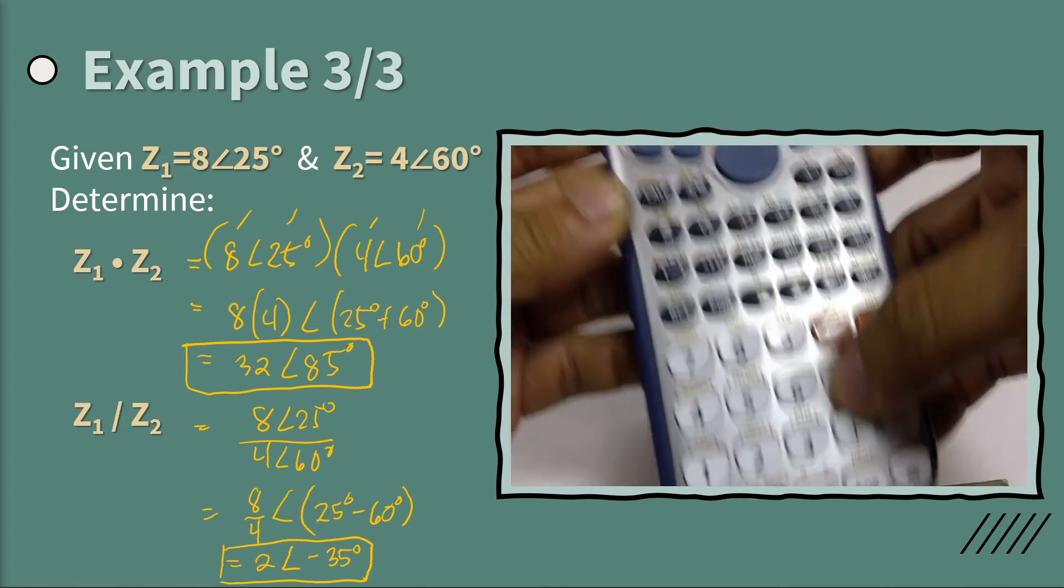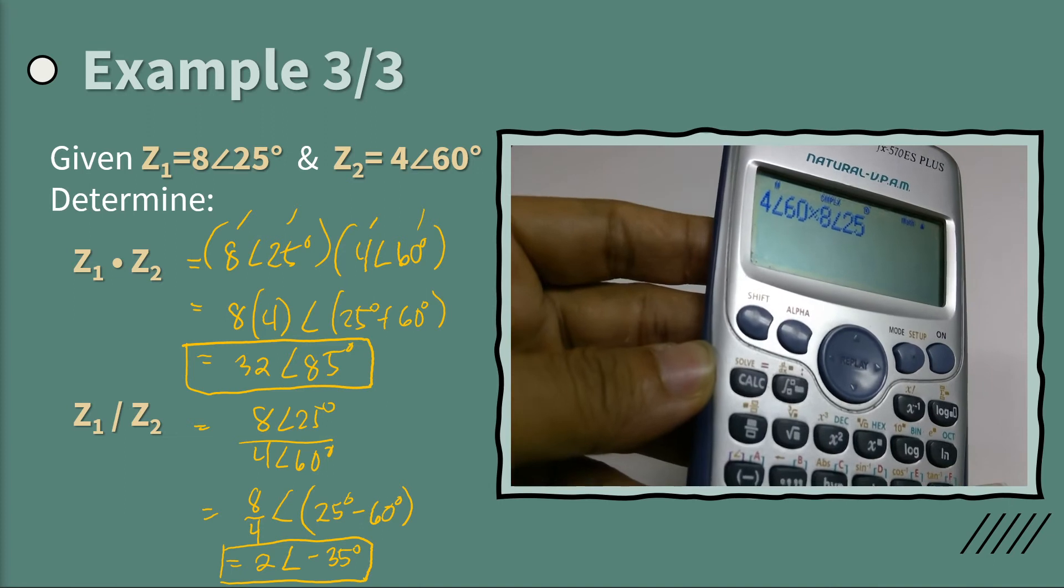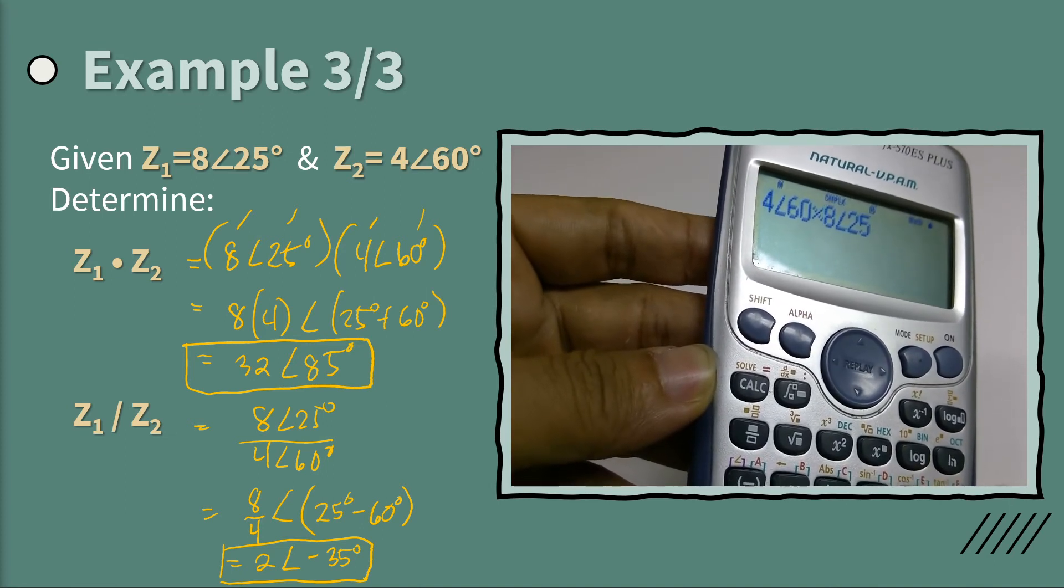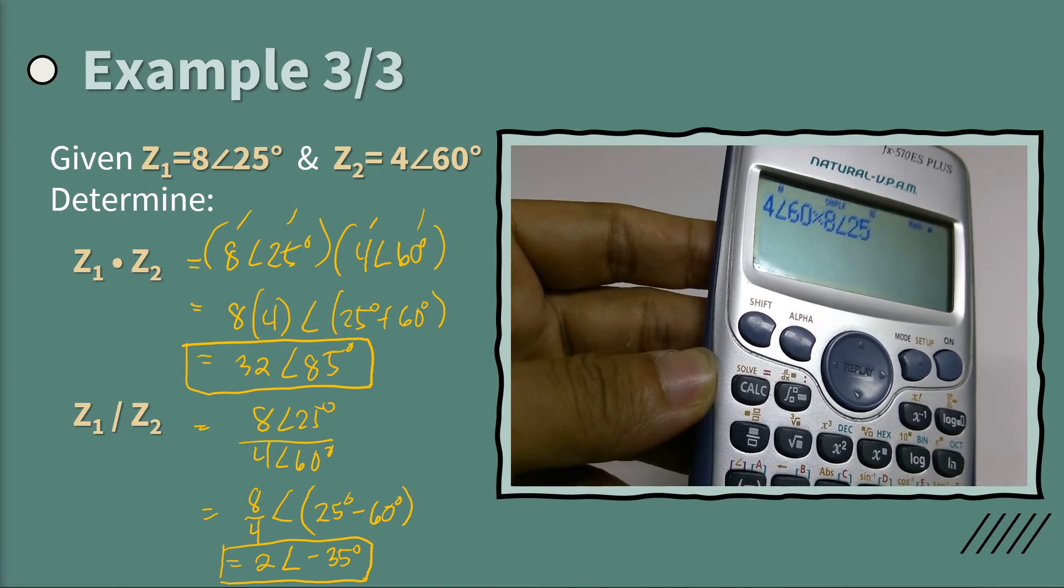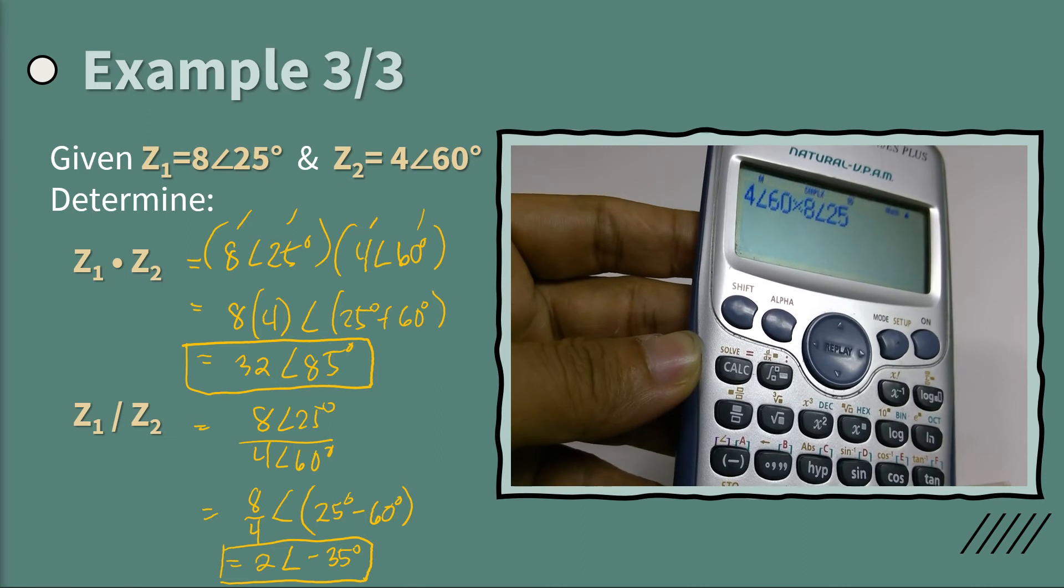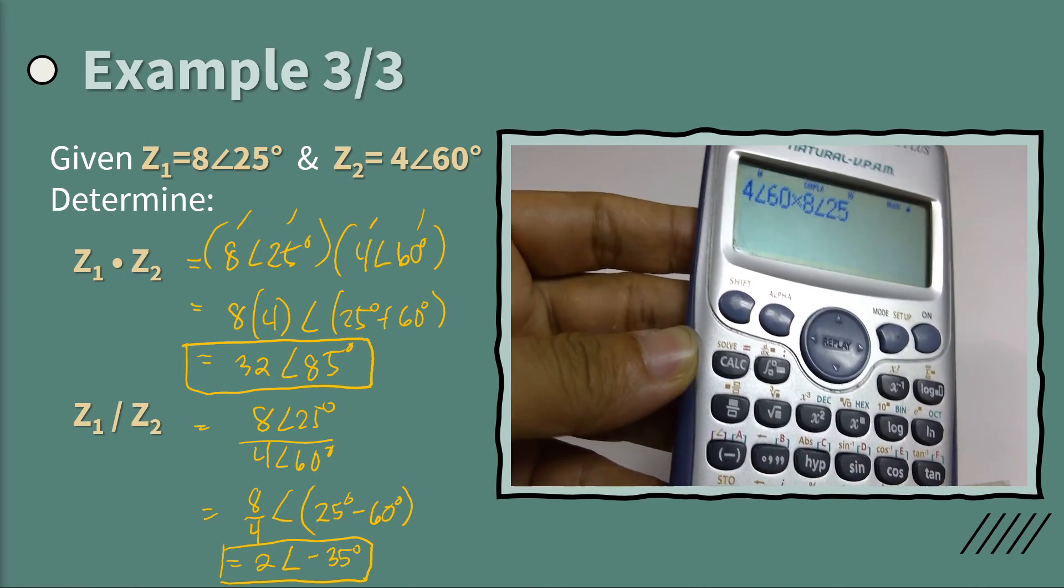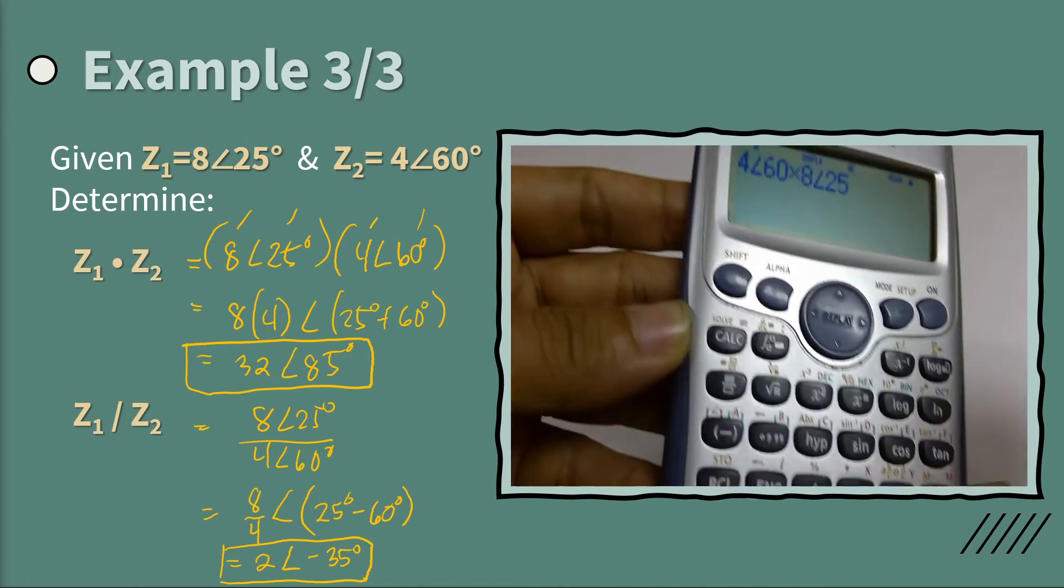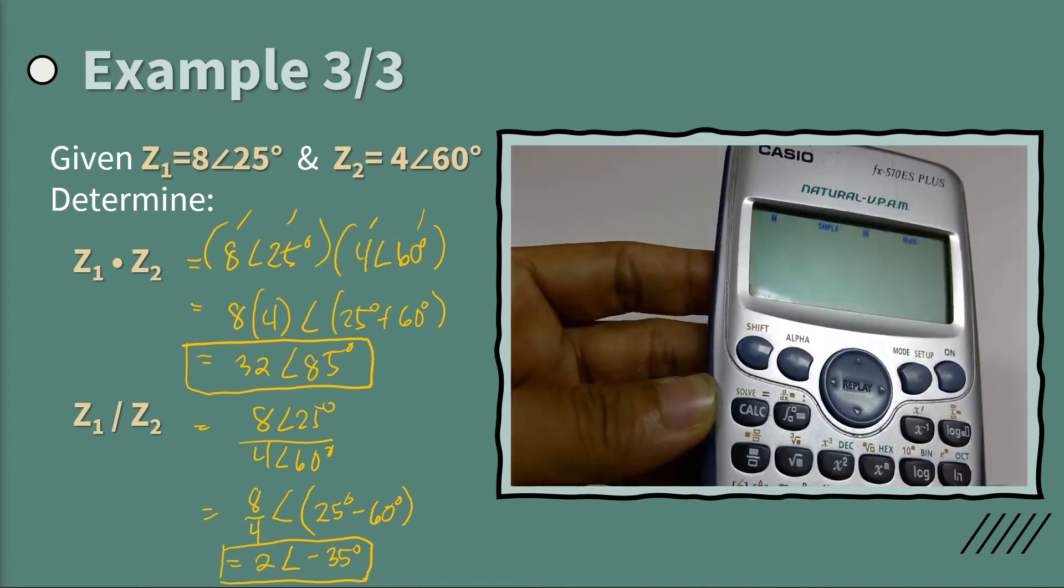So if you want to multiply the two, you just do this: 8 angle 25 times 4 angle 60. So you can interchange the two terms. That's what we call the commutative property of mathematics. So 8 angle 25 times 4 angle 60 is the same as the other way around.